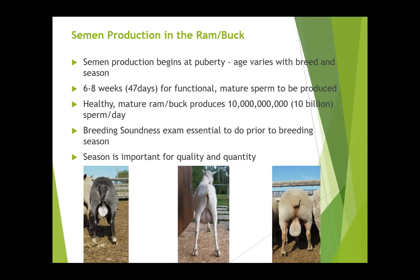If you look behind a ram or ram lamb and you can't actually see the testicles, they're not big enough. You should be able to see those testicles. If you can't see them, they're pretty darn tiny — that's your first culling process. If a ram all of a sudden had good testicles and now the testicle has atrophied — that can happen through trauma — that's also a concern.